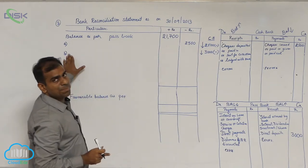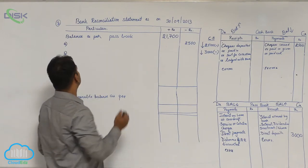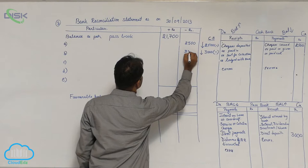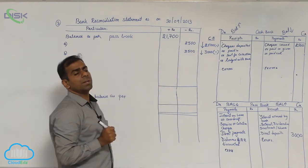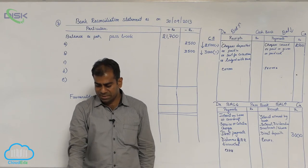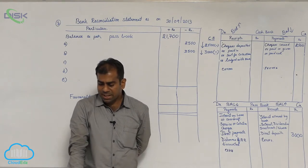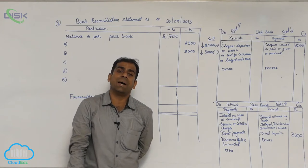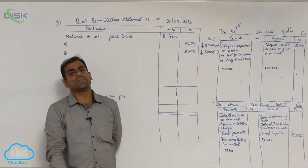So write: cheques deposited directly by customer — 3,000 in the minus column. Moving on to the next item: Statement C says that interest credited by bank.